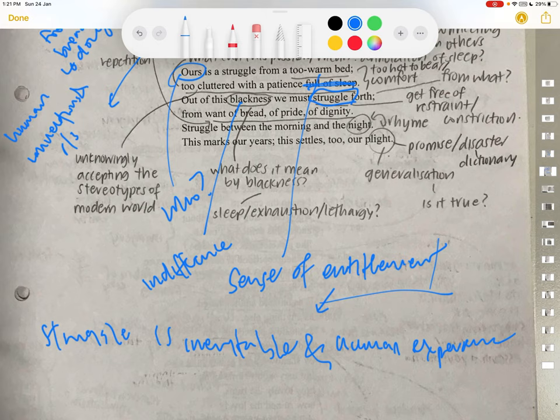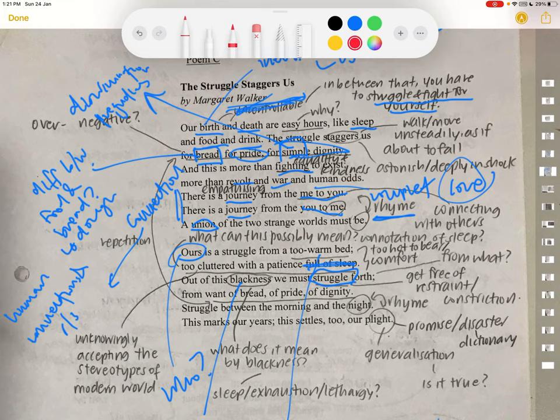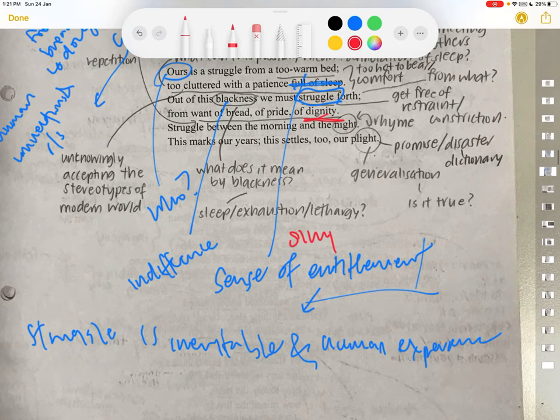Out of this blackness, we must struggle forth from want of bread, of pride, of dignity. So you realize here, of dignity versus simple dignity, and just plain dignity. What is the difference?